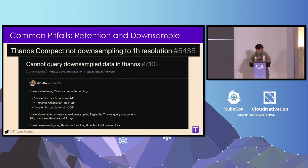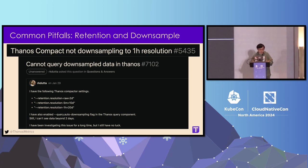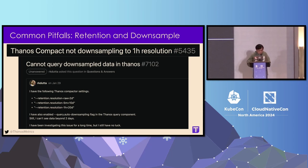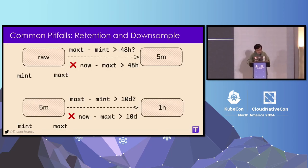Next, I'm going to talk about another pitfall related to Compactor. I get this question a lot: we don't have any Compactor backlog, but why are we only able to see our blocks downsampled to five minutes? Why can't we see any block with one-hour resolution? I want to clarify how downsampling works.